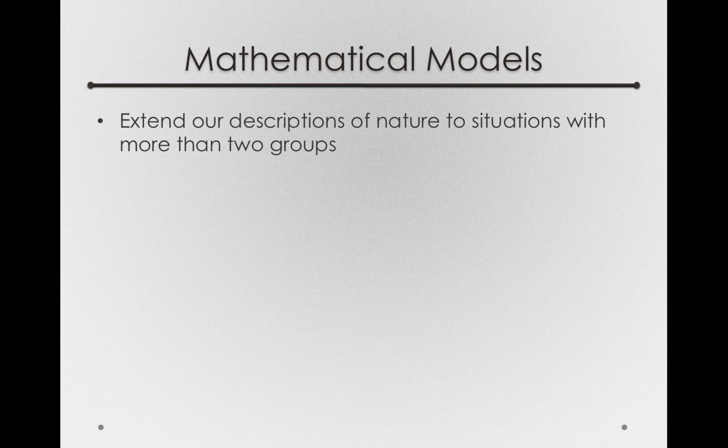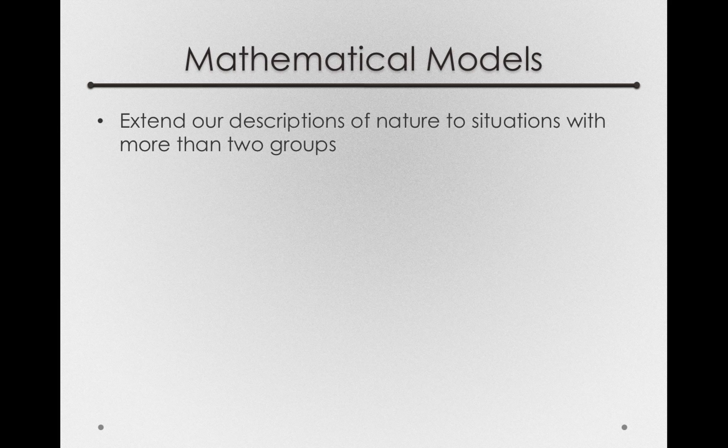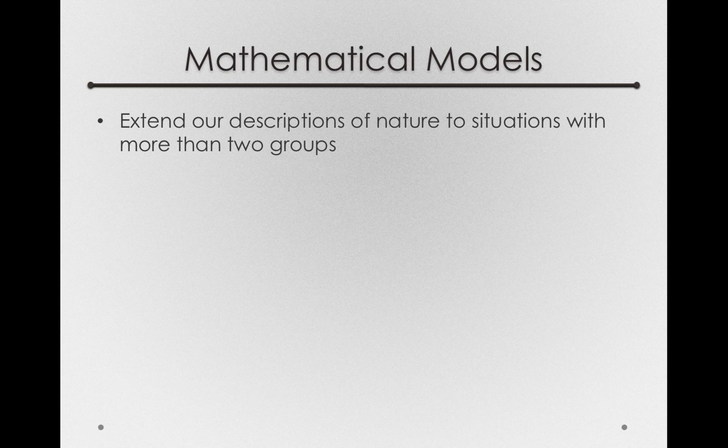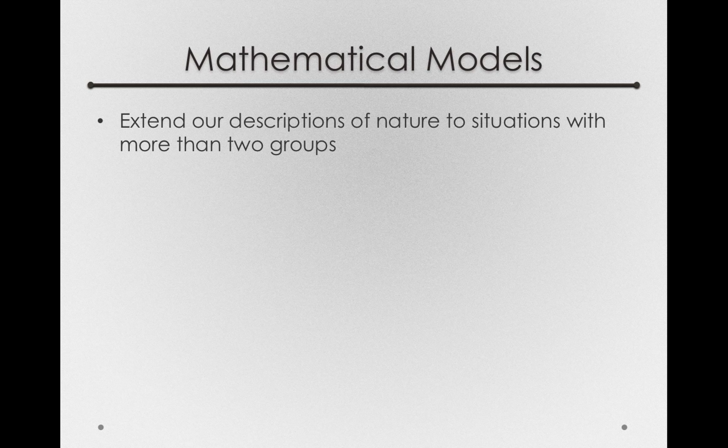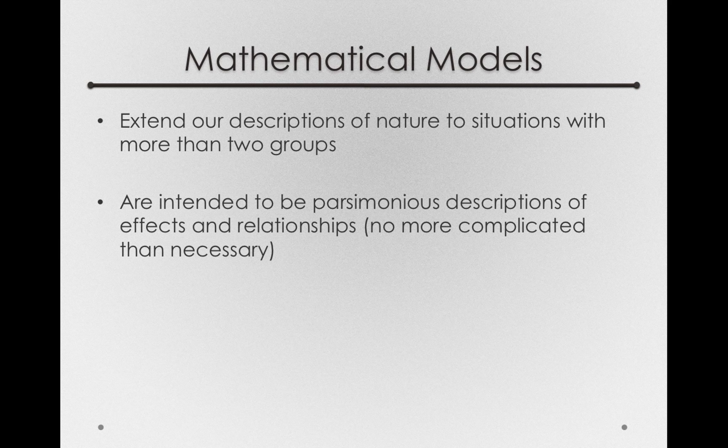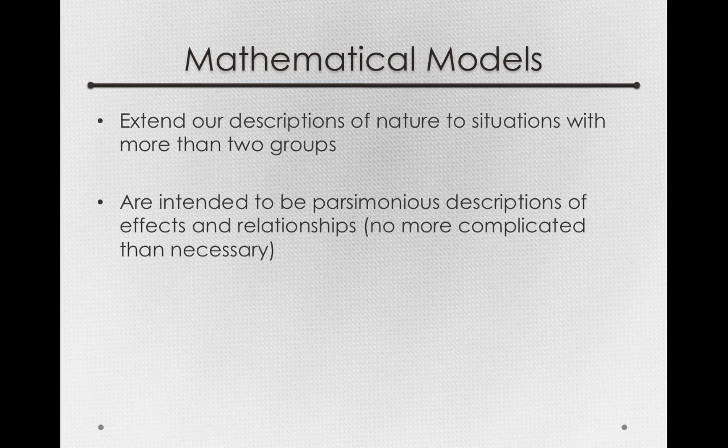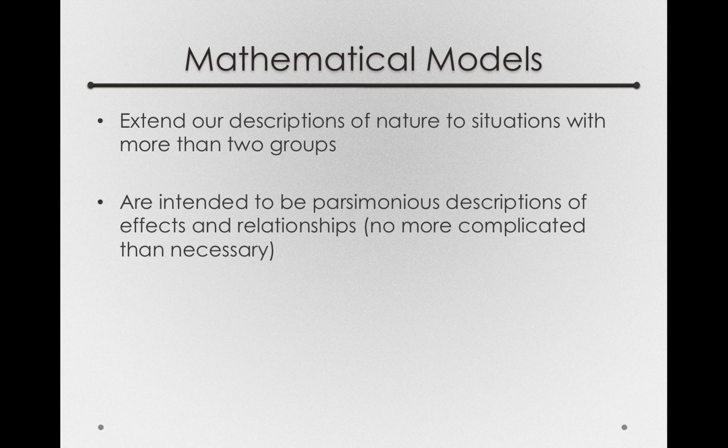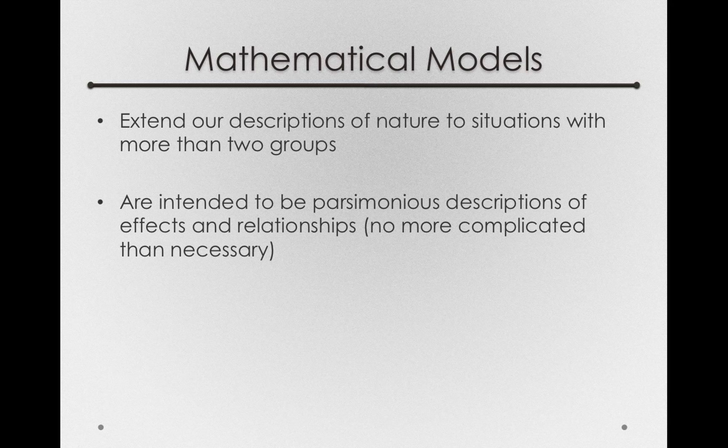Now in general, mathematical models allow us to extend our descriptions of nature to situations with more than two groups, or even predictions that are based on quantitative variables. We also are intending our models to be parsimonious descriptions of effects and relationships. That is, we don't want them to be any more complicated than necessary to make the inferences we want to make.